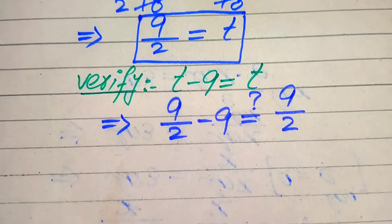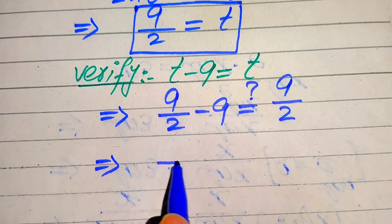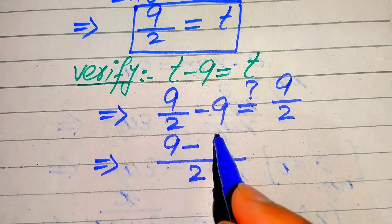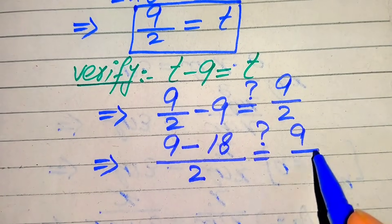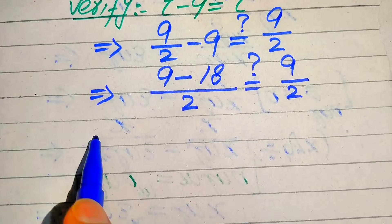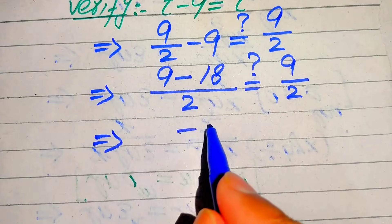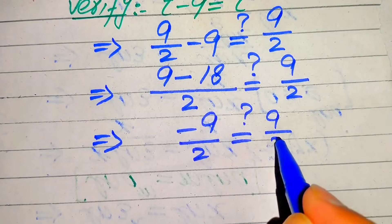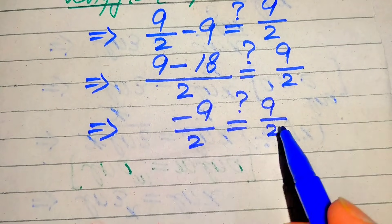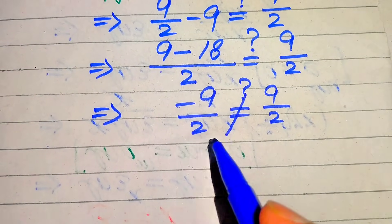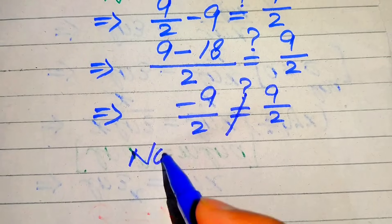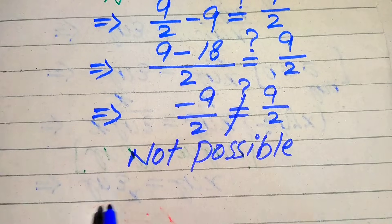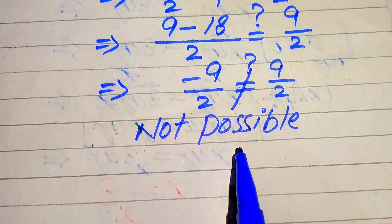We check whether both sides are equal. We take the LCM of the left hand side, which is 2, and get 9 minus 18 over 2, which is minus 9 over 2. We check whether this equals 9 over 2, and clearly minus 9 over 2 is not equals to 9 over 2.